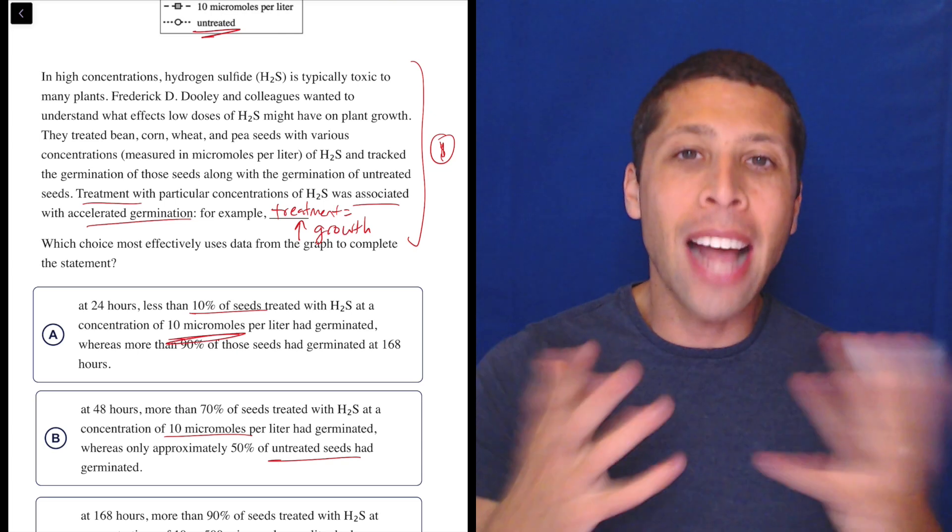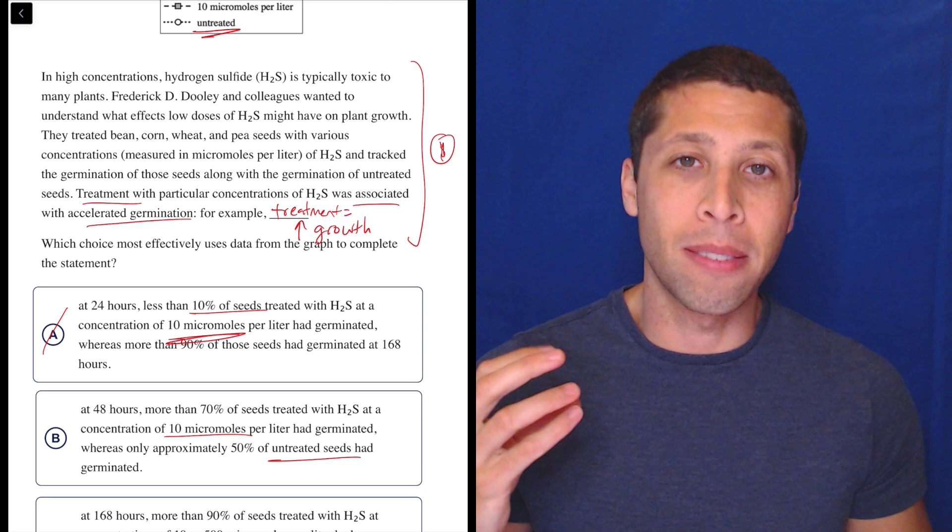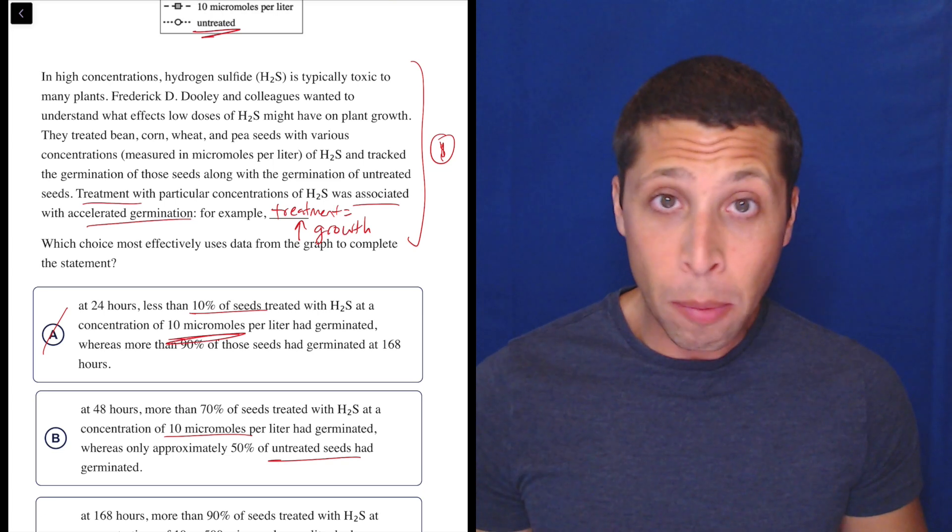But for now, I'd rather just treat this like an assembly line and just be like, okay, which choices are comparing a treatment to an untreatment, an untreated seed, right? Like that seems to be what we want if we want to show the accelerated growth. So hopefully now it's more clear why A doesn't do that. It doesn't hit that kind of comparison that the passage wants us to hit.